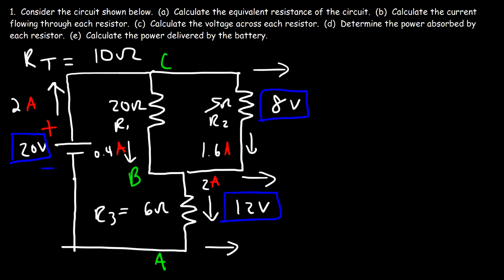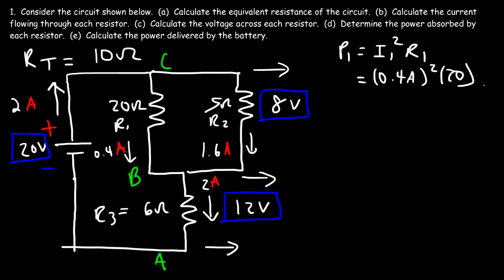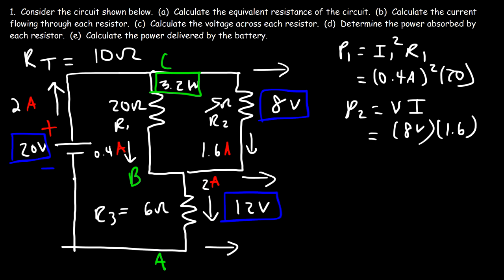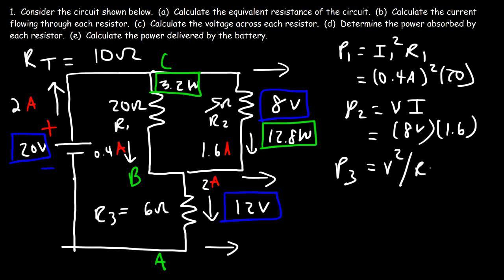Now let's determine the power absorbed by each resistor. For R1, using P = I²R: 0.4² × 20 = 3.2 watts. For R2, using P = VI: 8 × 1.6 = 12.8 watts. For R3, using P = V²/R: 12² / 6 = 144/6 = 24 watts.